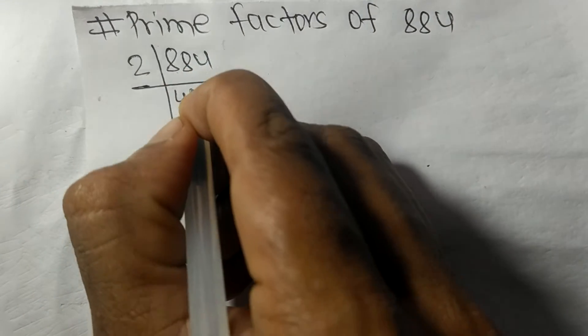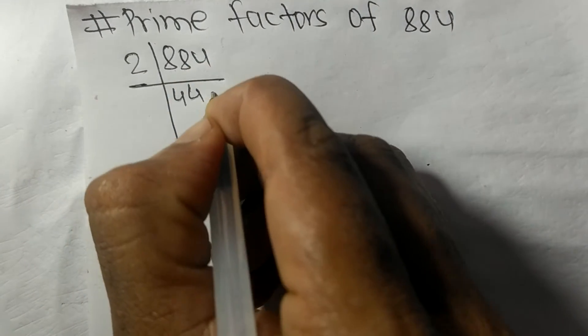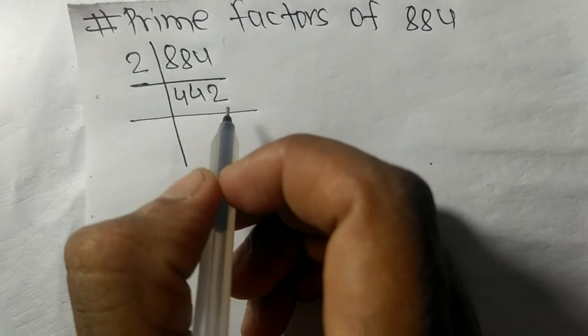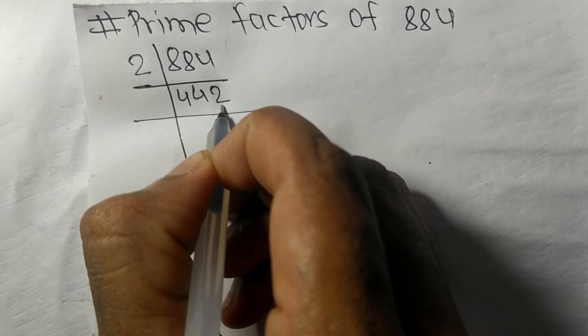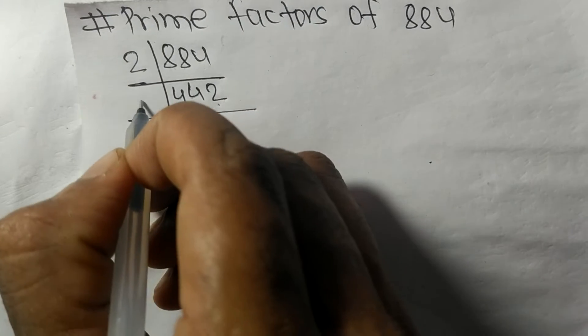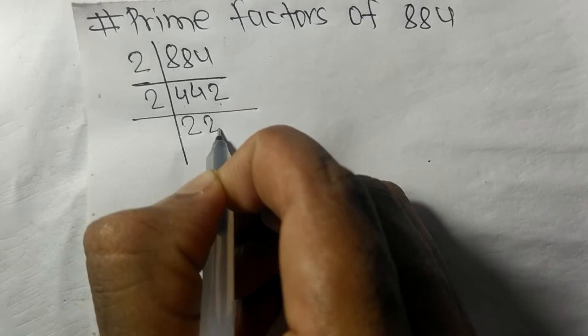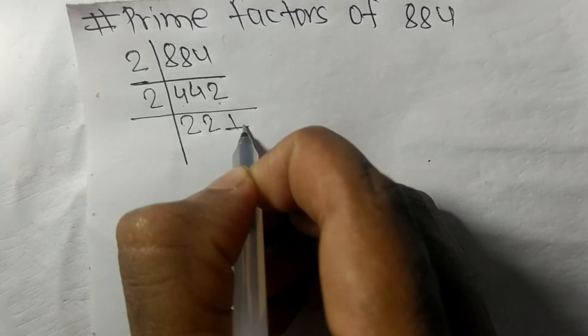2 times 4 means 8, 2 times 2 means 4. Again it has an even number 2 at last, so it is exactly divisible by 2. 2 times 2 means 4, 2 times 1 means 2.